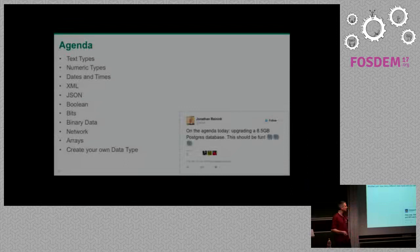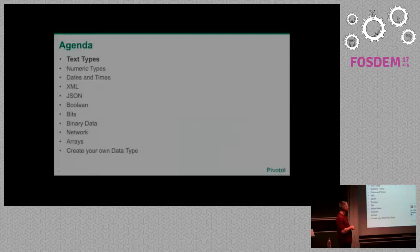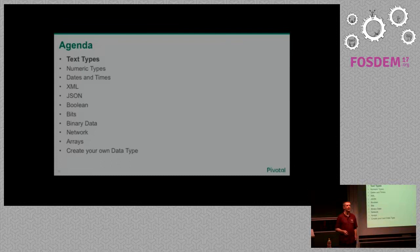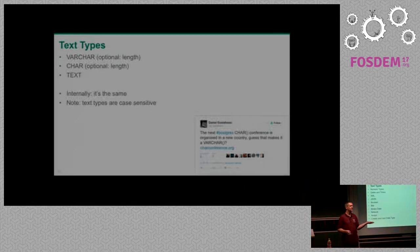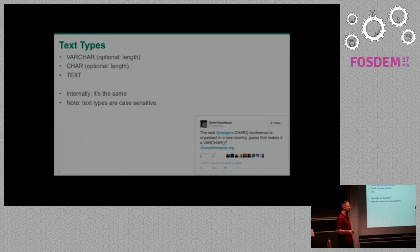We have text types, numeric types, dates, and special types handling JSON, boolean, and binary data. We start with text types. In the end we have VARCHAR, CHAR, and TEXT, but internally they are all the same — it's one data type internally, just external representation. Unlike some other databases, all text types in Postgres are case sensitive. If you want a case-insensitive comparison, you need to use ILIKE, not LIKE.